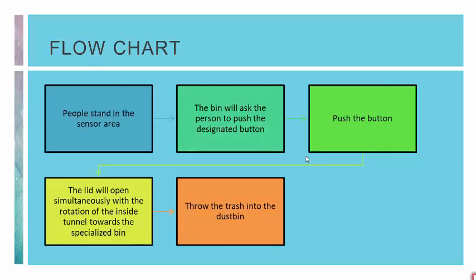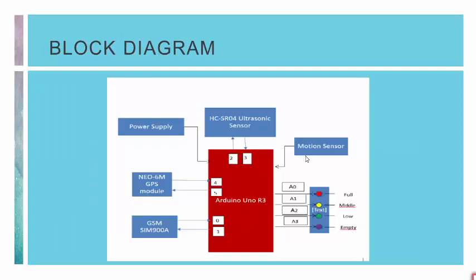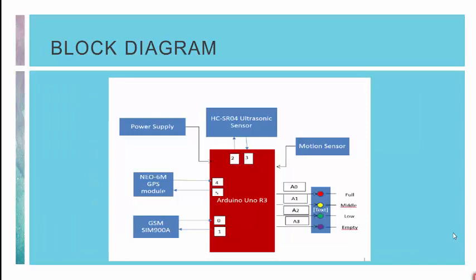The flow chart of our mechanism works as follows: a person stands in the sensor area, the bin will ask the person to push the designated button. When the button is pushed, the lid will open simultaneously with the rotation of the inside tunnel towards the specialized bin, and then the person throws the trash into the dustbin.